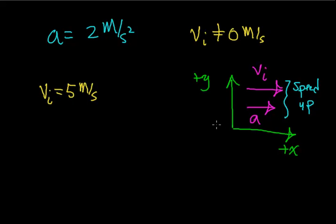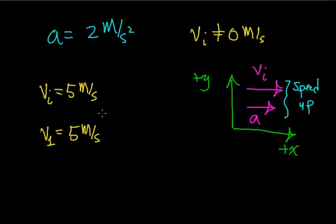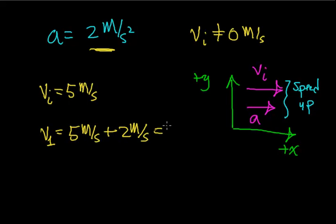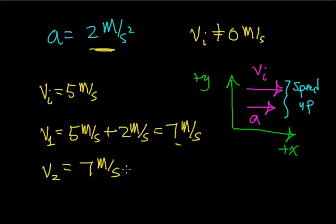Let's look at what the velocity is going to be after 1 second of accelerating at 2 meters per second squared. After 1 second, the velocity is at least 5 meters per second because it's increasing. If the velocity increases at a constant rate of 2 meters per second, then after 1 second, the velocity goes from 5 meters per second to 7 meters per second. After 1 more second, starting from 7 meters per second, the velocity increases by 2 meters per second per second, giving 9 meters per second.